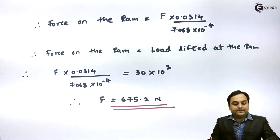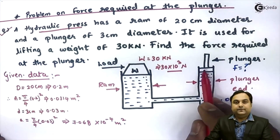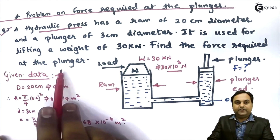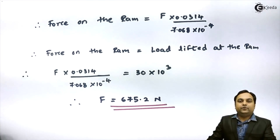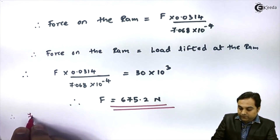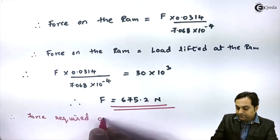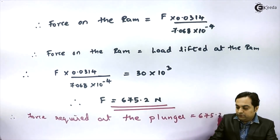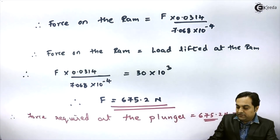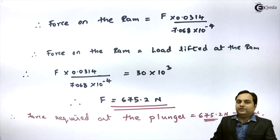F is the force required at the plunger, and the question was to find the force required at the plunger. Therefore, force required at the plunger = 675.2 Newton. This is our answer. As we have seen in this video, we calculated the force required at the plunger for a hydraulic press.